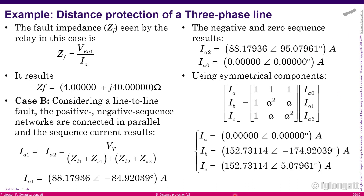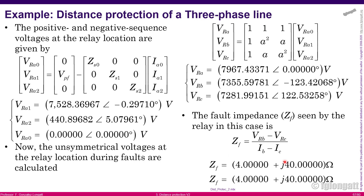Using the classical symmetrical components transformation — ABC quantities equal to matrix A multiplied by the symmetrical components — we get the results for phases A, B, and C. There are no surprises: phase A current is zero, as expected, and the currents in phases B and C are 180 degrees apart, consistent with the line-to-line fault condition where current B equals minus current C.